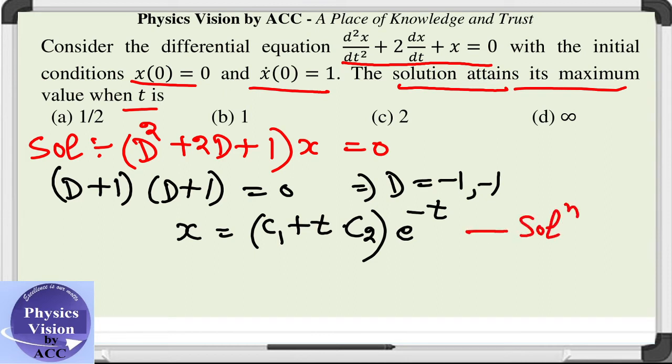Now we will apply the given boundary conditions. At t = 0, x = 0. Substituting this, we get 0 = c₁ + 0, which gives c₁ = 0.